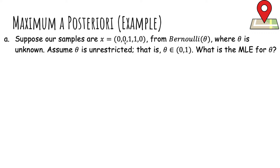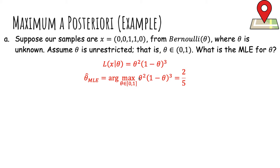Suppose we have samples 0, 0, 1, 1, 0 from Bernoulli(θ) where theta is unknown and unrestricted, so theta is in the interval [0, 1]. The maximum likelihood estimate: we write the likelihood function — we had two heads so theta squared, and three tails so (1-θ)³. Taking the derivative and setting to zero gives theta = 2/5, which visually maximizes this likelihood function.